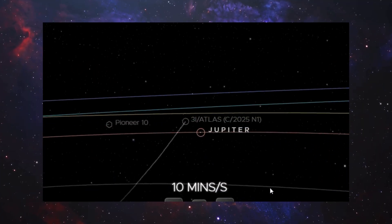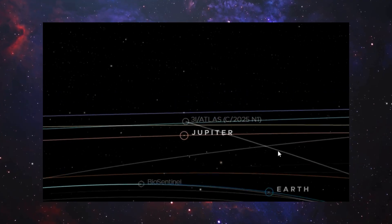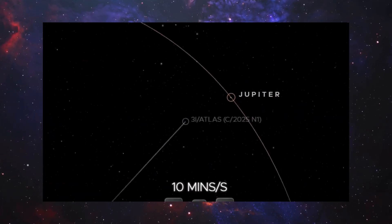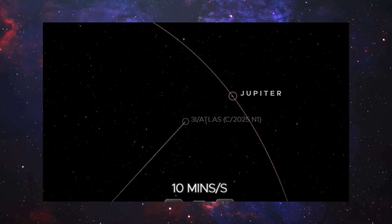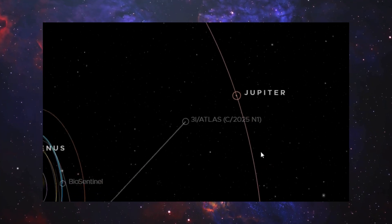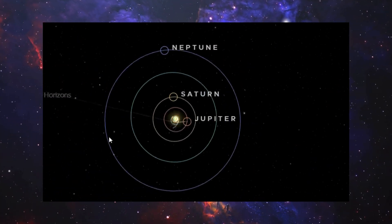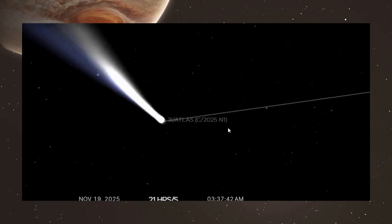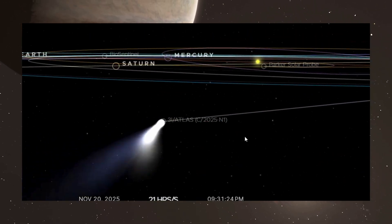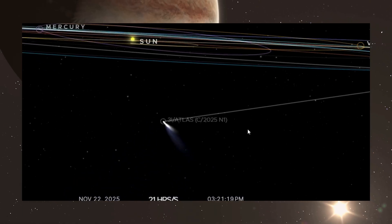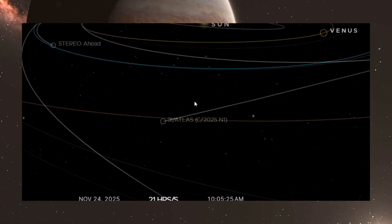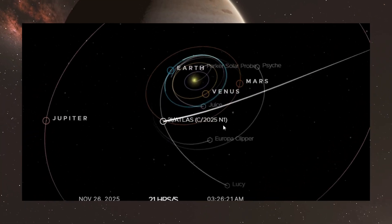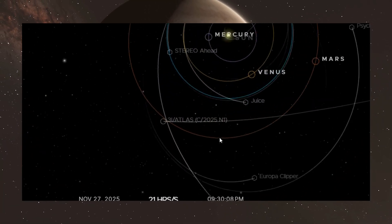To grasp how insane that is, imagine trying to throw a dart at a dartboard from the opposite end of a football field while blindfolded and still landing within a tenth of a percent of the bullseye. What 3i Atlas is doing makes that look easy. Statistically, the odds of this happening by random chance are 0.004%, or roughly once in 26,000 attempts.